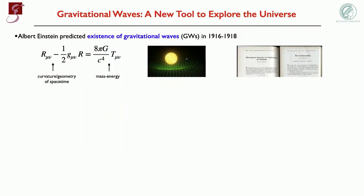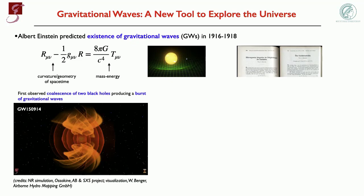I'm delighted to be here to talk about gravitational waves. Gravitational waves are a new tool that we have at our disposal to explore the universe. They were predicted by Albert Einstein in two papers in 1916 and 1918. They are a consequence of the Einstein equations, which represent the interplay between curvature on the left-hand side and the energy-momentum tensor on the right-hand side. They are produced by the accelerated motion of big objects in the universe like black holes and neutron stars. Here on the left is a still picture of a simulation we did in 2015 when we had the first merger of two black holes detected by the LIGO and Virgo collaboration.